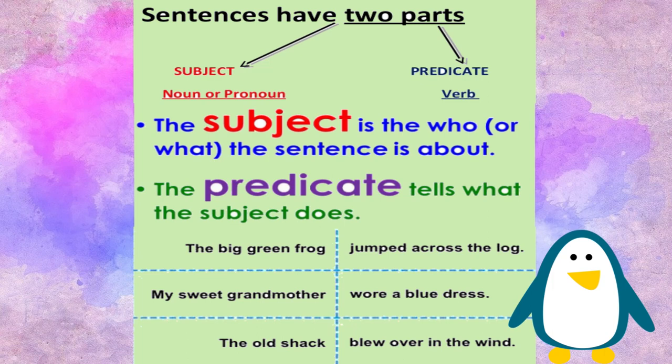The old shack blew over in the wind. The old shack is the subject. Blew over in the wind is the predicate.